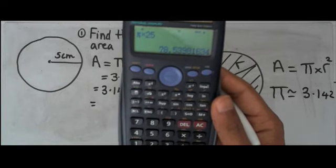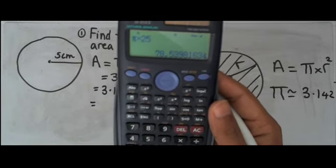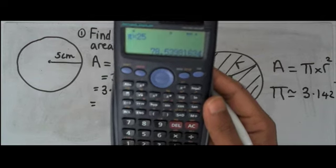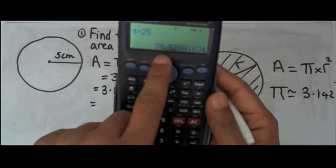Alright, we don't want such a long number. And the question is asking me to write down the answer to one decimal place. So here I've got 78.53.